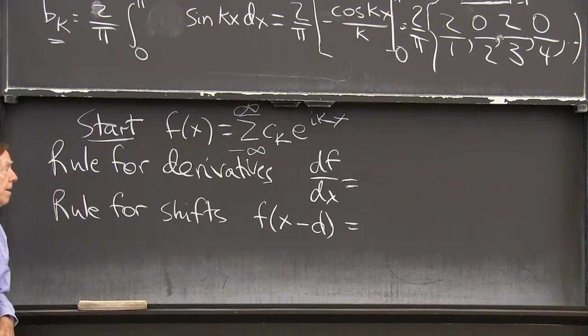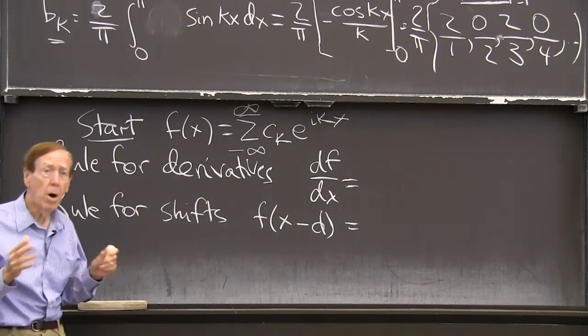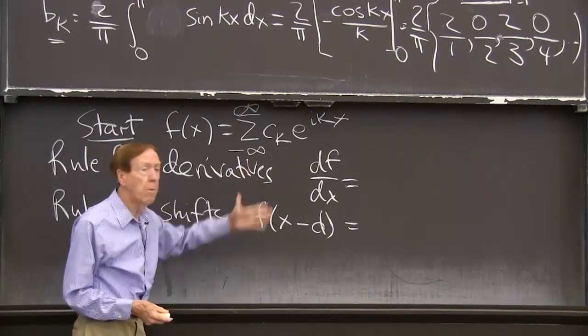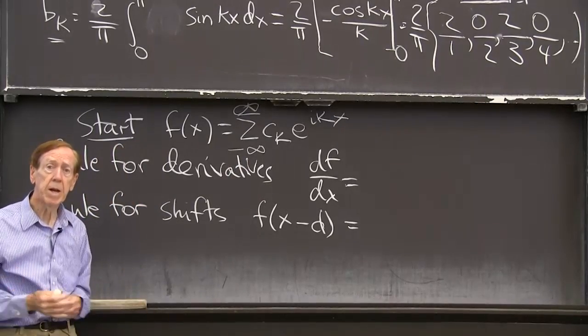And you remember that sum went from minus infinity to infinity. OK, so I have a Fourier series. I'm imagining I know the coefficients. And I want to say, what happens if I take the derivative?